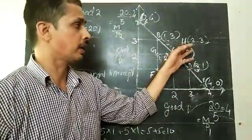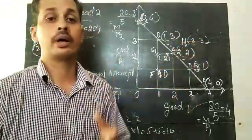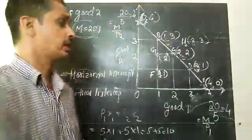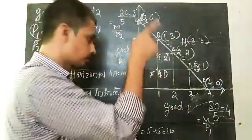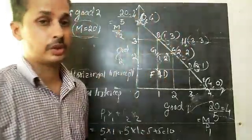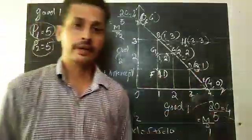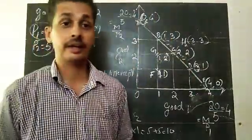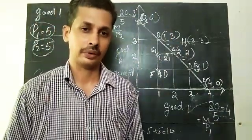So that is all about the different points on the budget line, below the budget line, and above the budget line. In the next class we will discuss the slope of the budget line. Till then, goodbye, thank you.